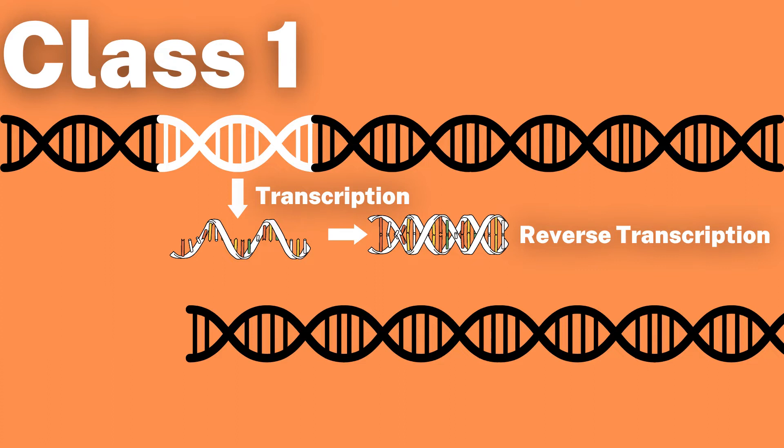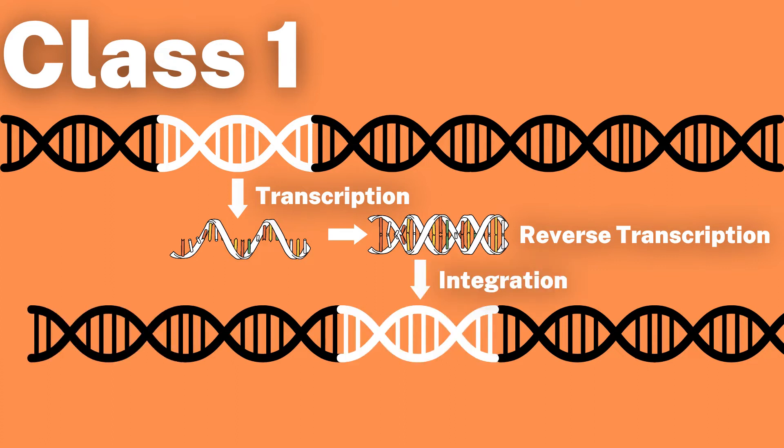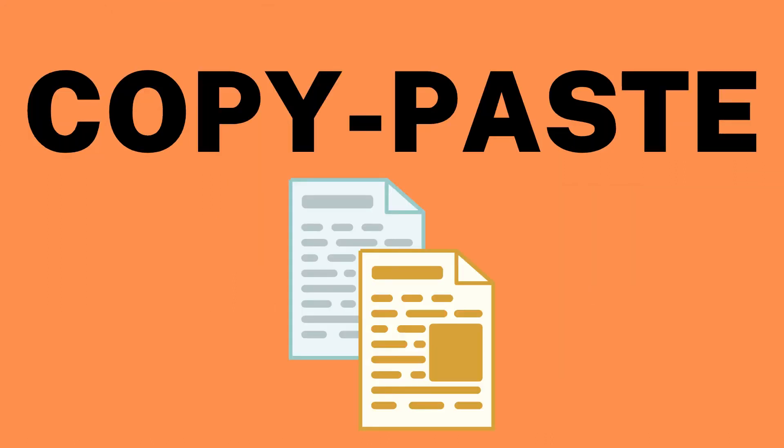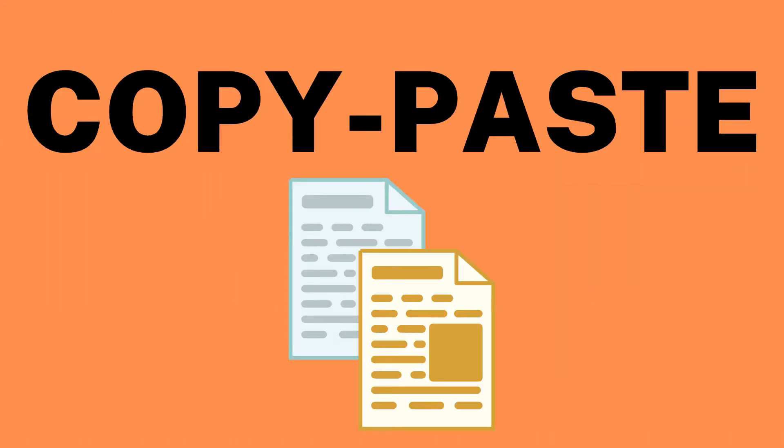The resulting DNA is then inserted back into the genome, making this a sort of DNA copy and paste. Class 2, on the other hand, has no RNA intermediate and the element remains in DNA form throughout the process of transposition.